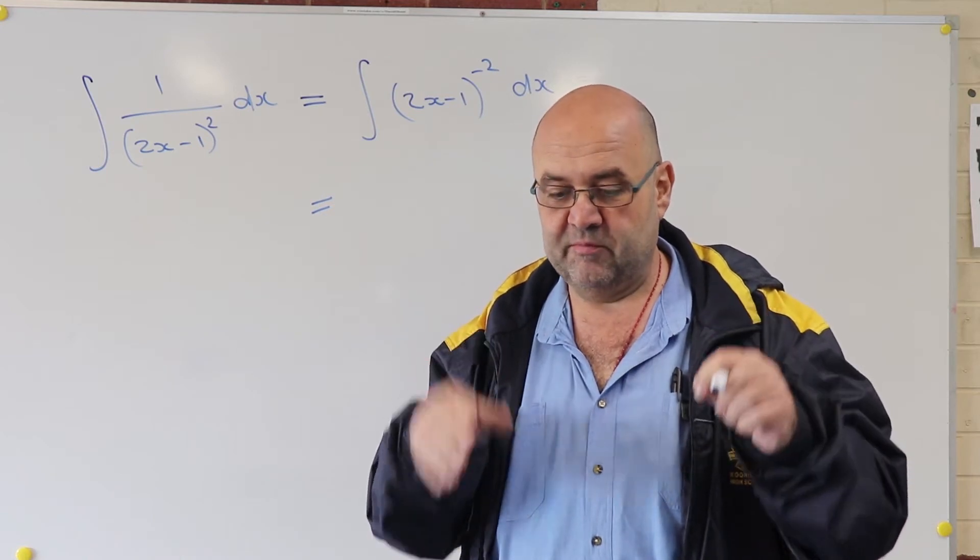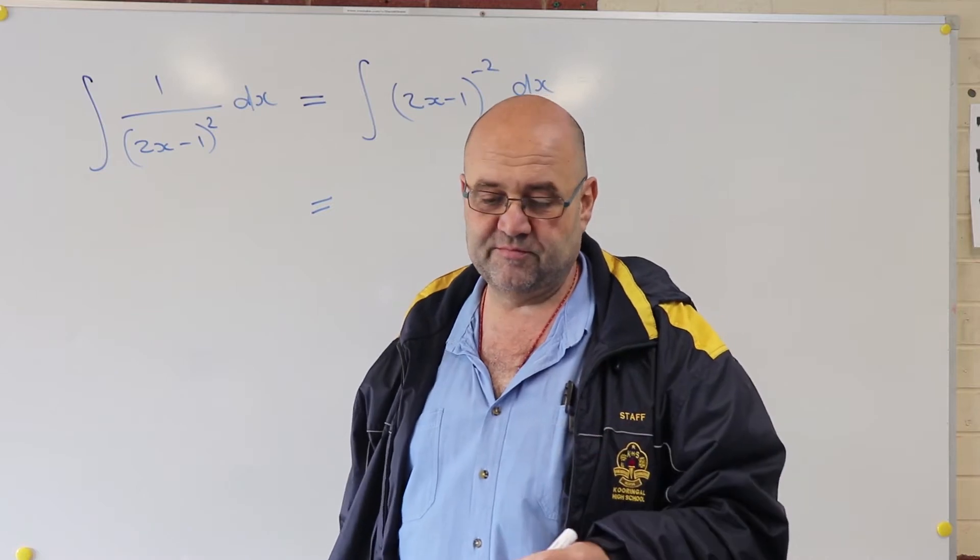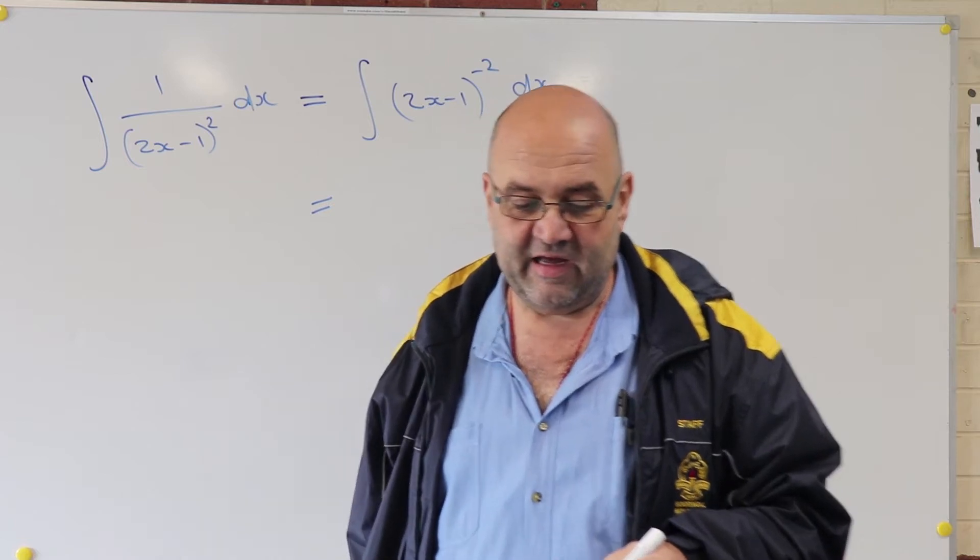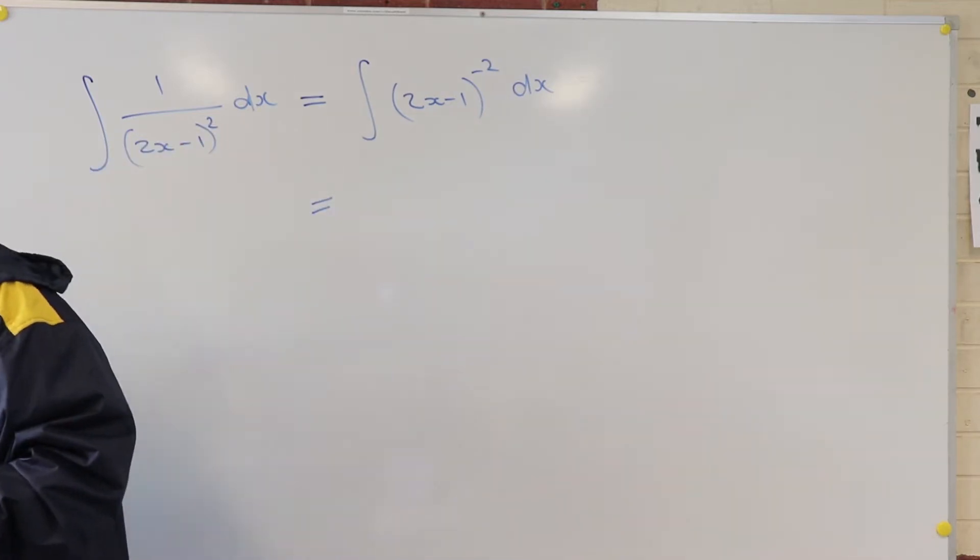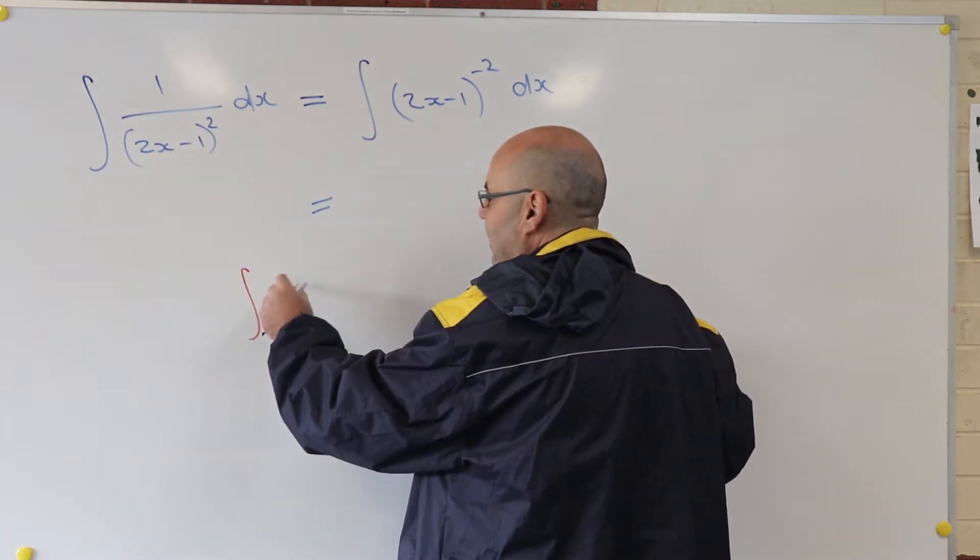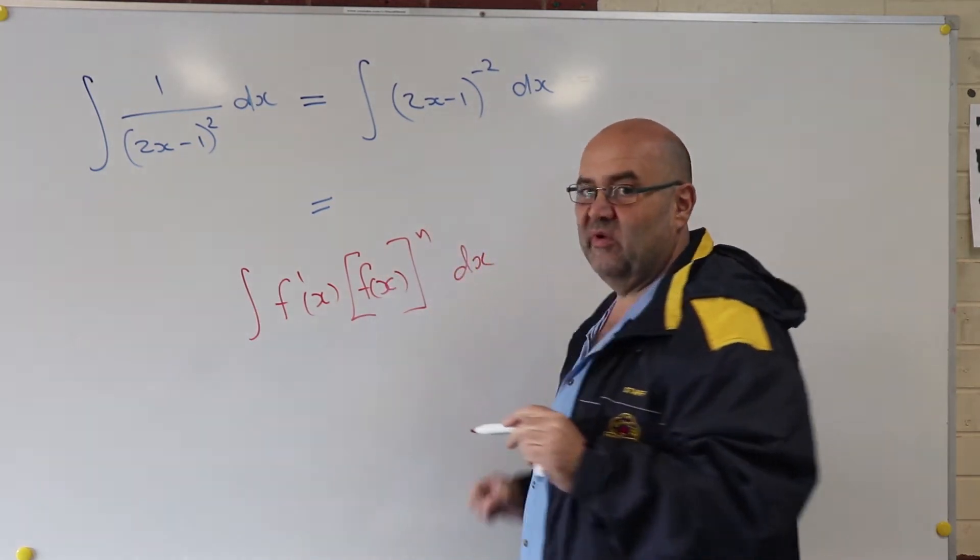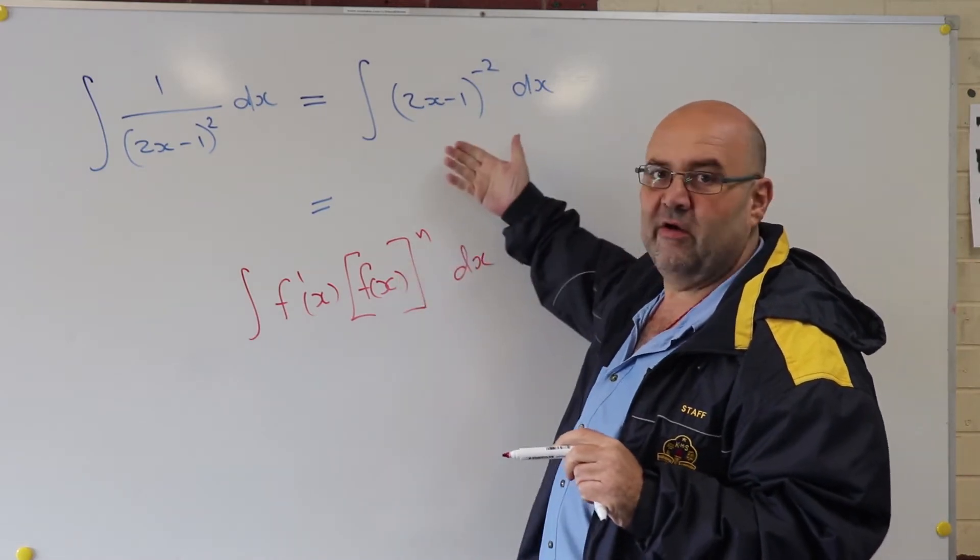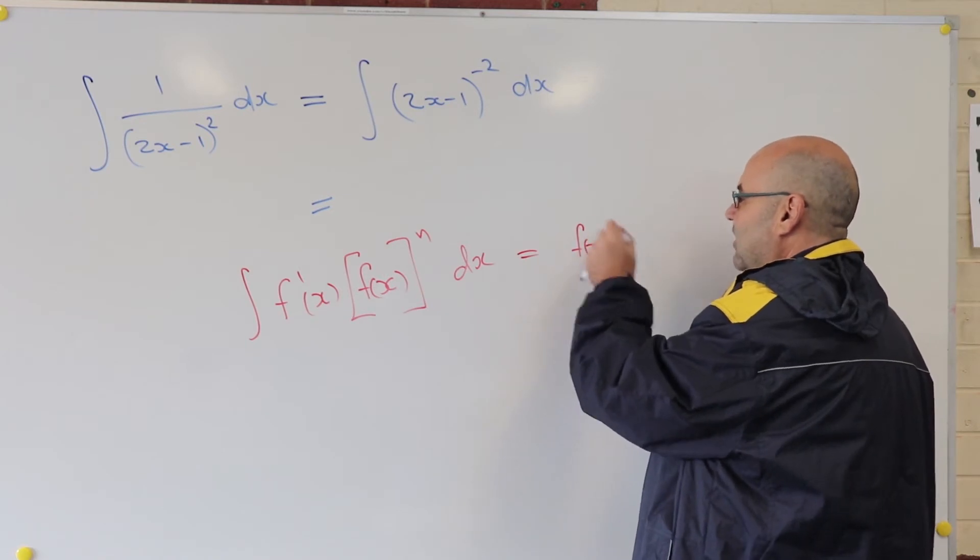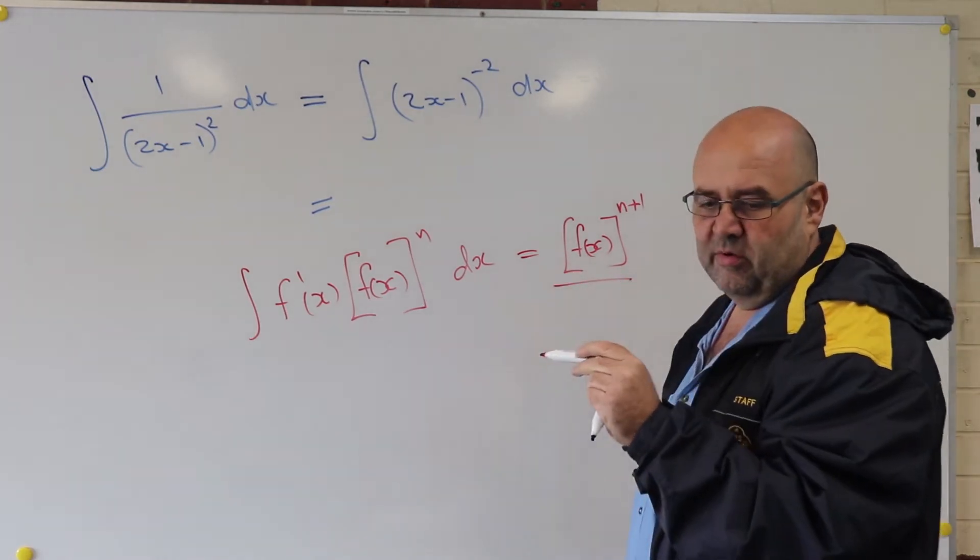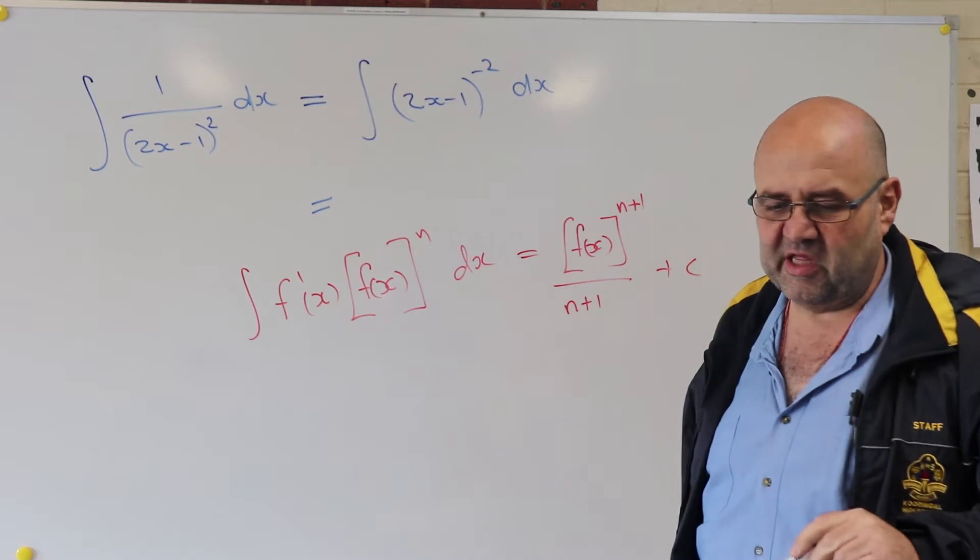The very first rule tells us that if we've got f'(x) times f(x) to the power of n, so it says, if I'm integrating f'(x) times f(x)^n with respect to x, that's not immediately apparent. That doesn't look like that, does it? Anyway, this tells us that the integral here is going to be f(x)^(n+1) divided by (n+1) plus c. They don't write it exactly like that, they'll write 1 over (n+1) at the front, but it's the same thing algebraically.